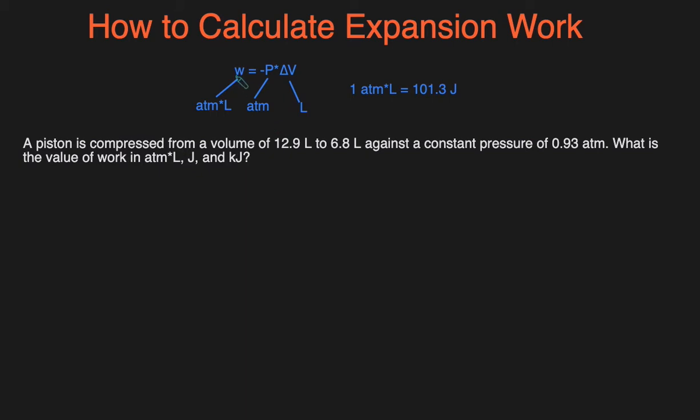But sometimes you don't want work just in atm·L—you want it in joules or kilojoules, which is more conventional. So you would use this conversion factor to turn the atm·L into joules, and then you can use other conversion factors to turn the joules into kilojoules. Let's take a look at an example.